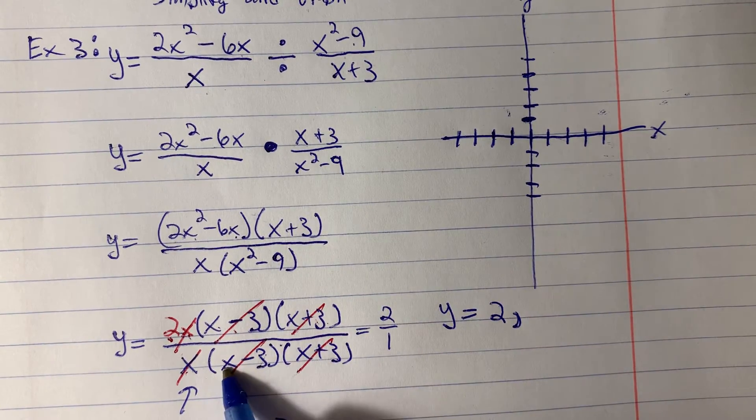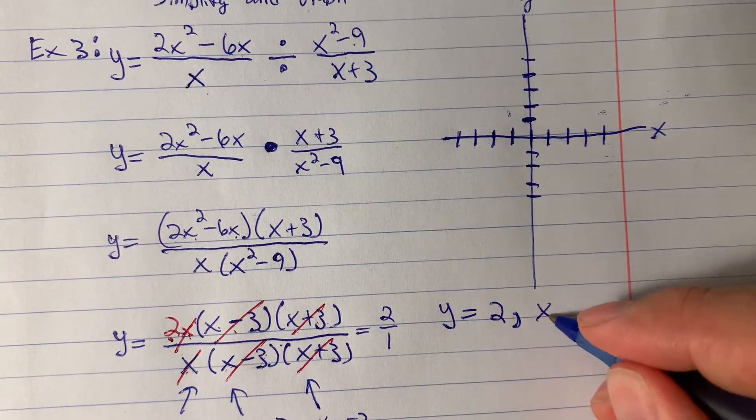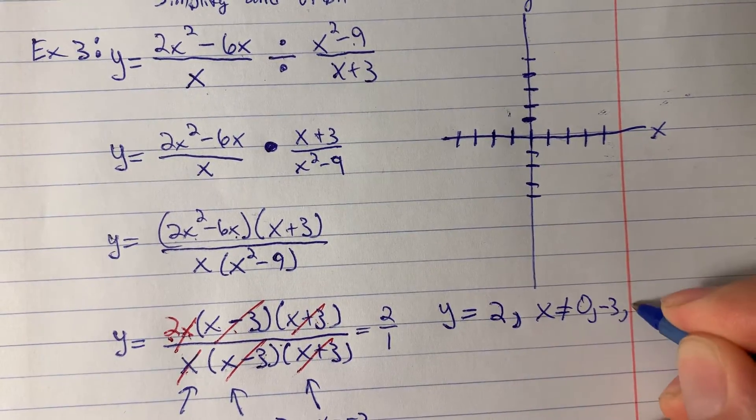And so if x is 3, that's going to be a problem. And if x is negative 3, that's going to be a problem. These are three values that x cannot be: 0, negative 3, and 3.